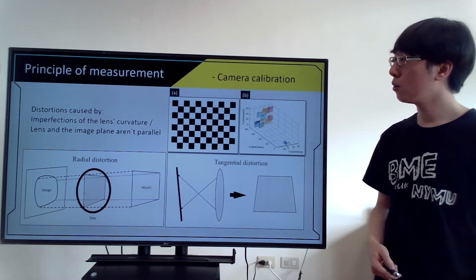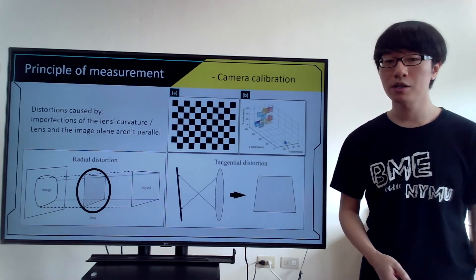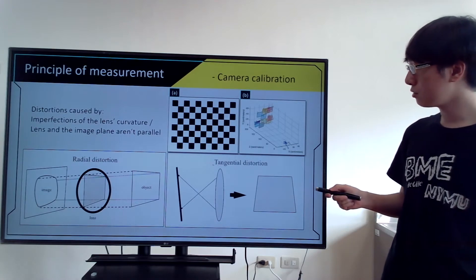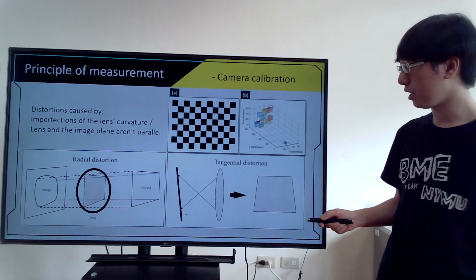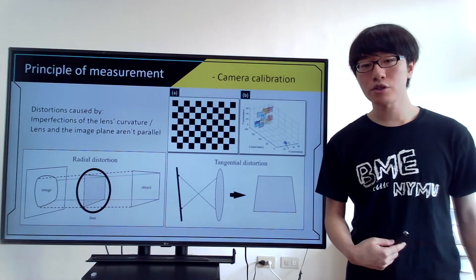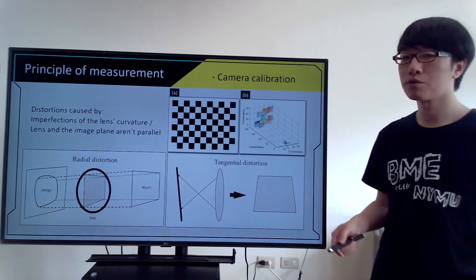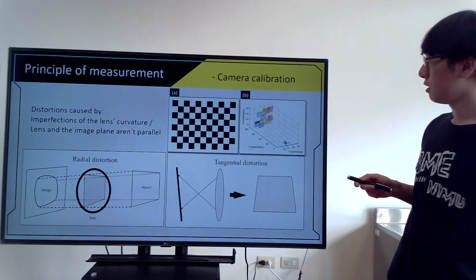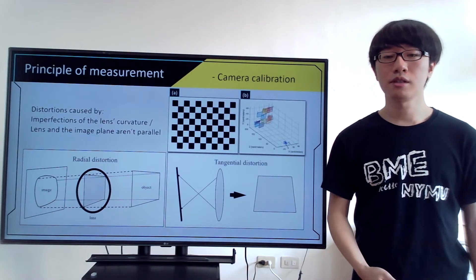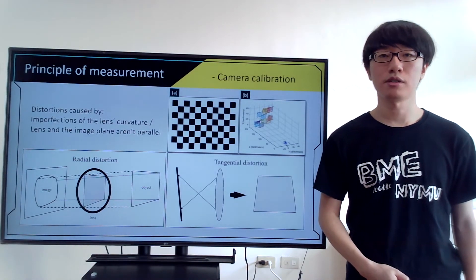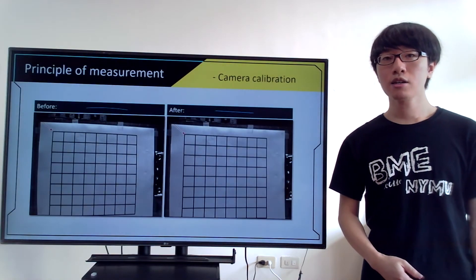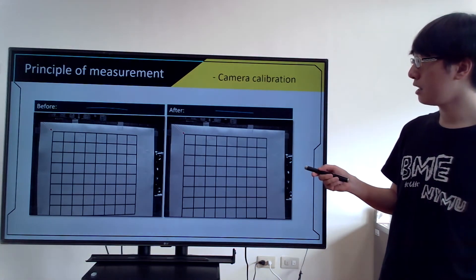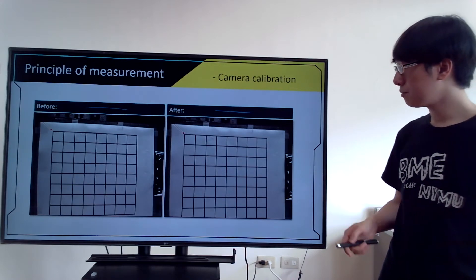Before actually getting into measuring, we need to calibrate the camera by matrix transformation to remove the radial distortion caused by imperfection of the lens curvature, and the tangential distortion caused by the unparallel alignment of the lens and the image plane. We use the checkerboard in figure A as a reference plane and shoot multiple images at different angles for the calibration program. In figure B, the program simulates the position of the checkerboard and outputs the calibration equation. After calibration, the barrel distortion is corrected and each line of the square is brought back to a straight line.